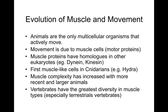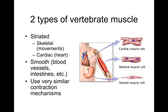Vertebrates have the greatest diversity in muscle types, especially terrestrial vertebrates. There are two major types of vertebrate muscle: striated muscle, which is responsible for skeletal movements; and cardiac muscle, a special type of striated muscle that surrounds the heart. Then there are smooth muscles, part of the involuntary system — they surround the blood vessels, the intestines, and so on. They're involuntary and help your organs to function properly. Nevertheless, they all use very similar contraction mechanisms.